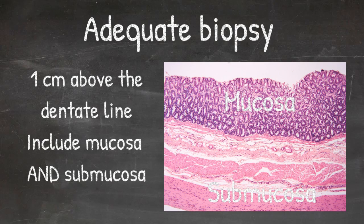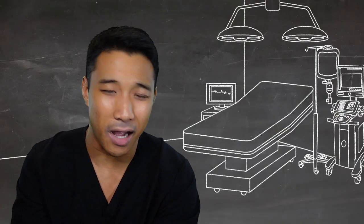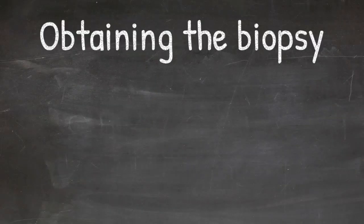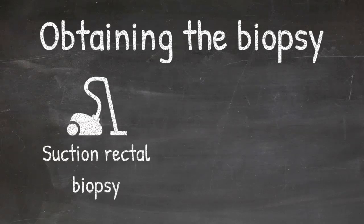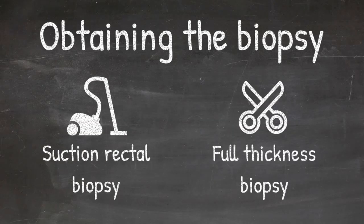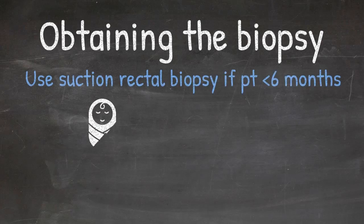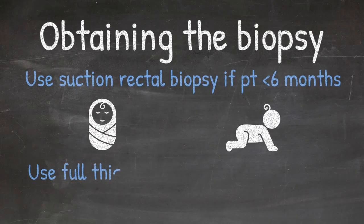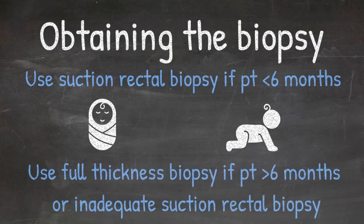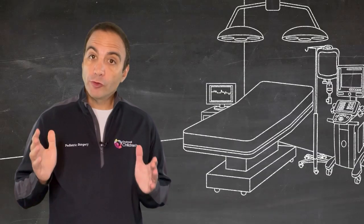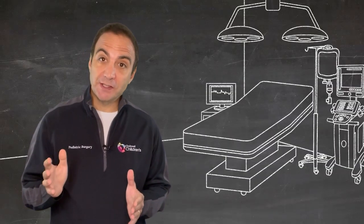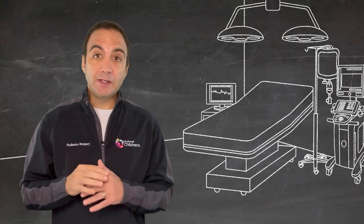What are the different ways to get a biopsy? A rectal biopsy can be obtained through suction technique or open full thickness technique. The suction technique is typically used for patients less than six months of age, and one should consider using a full thickness technique for patients older than six months or when a suction biopsy is inadequate.